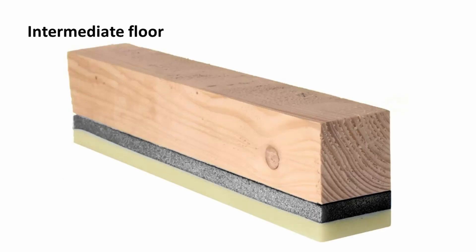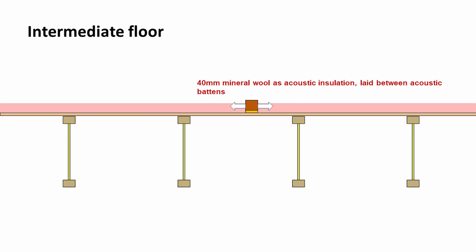The batten has two layers of foam underneath — one is very compressible, the other less so — so that when you walk on the floor, that little bit of foam allows the sound to be dampened. In between the battens, we would have 40mm of mineral wool to act as acoustic insulation.